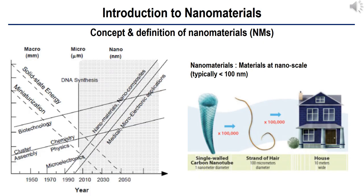Nanoscale materials are defined as a set of substances where at least one dimension is less than approximately 100 nanometers. A nanometer is one millionth of a millimeter, approximately 100,000 times smaller than the diameter of a human hair. Nanomaterials are of interest because at this scale, unique optical, magnetic, electrical, and other properties emerge. These emergent properties have the potential for great impacts in electronics, medicine, and other fields.